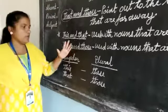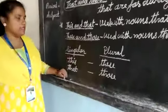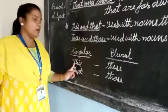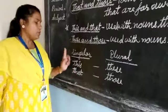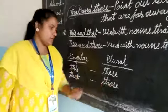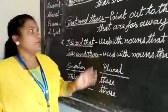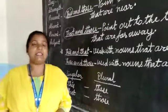Let us see the singular and plural of this and that. This is singular and the plural of this is these. That is singular and the plural of that is those. So dear children, I have told you about this, these, that, and those.